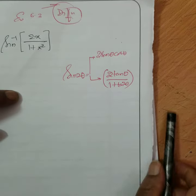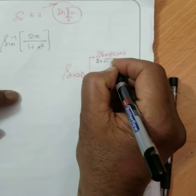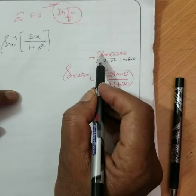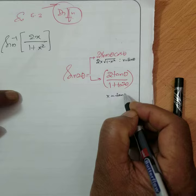You know this or no? This you can write like this: 2x root 1 minus x squared, where x is equal to sin θ. Right, here x is equal to tan θ.